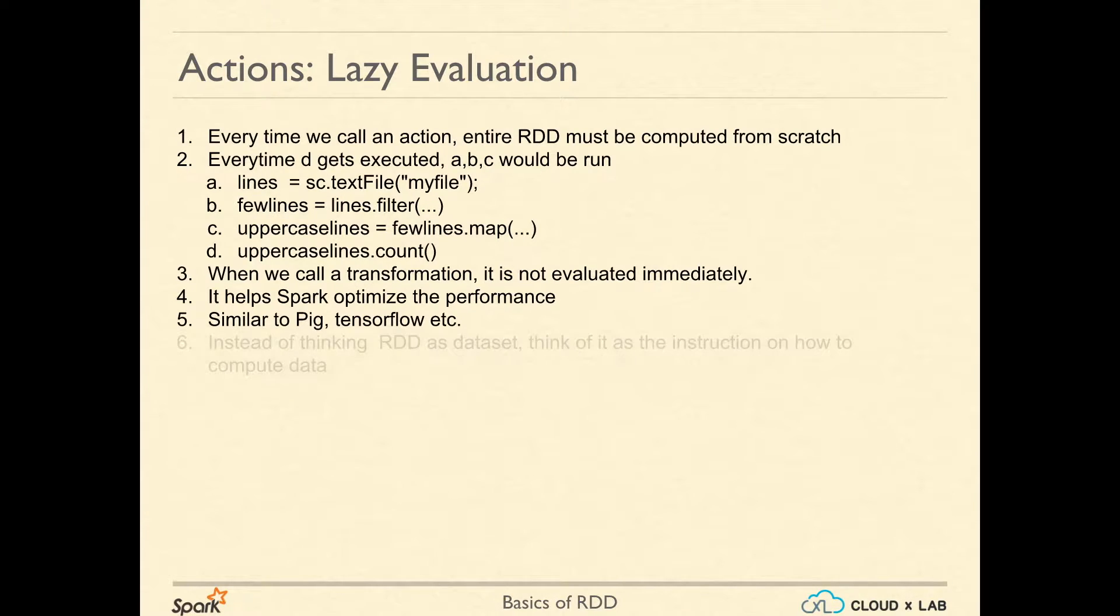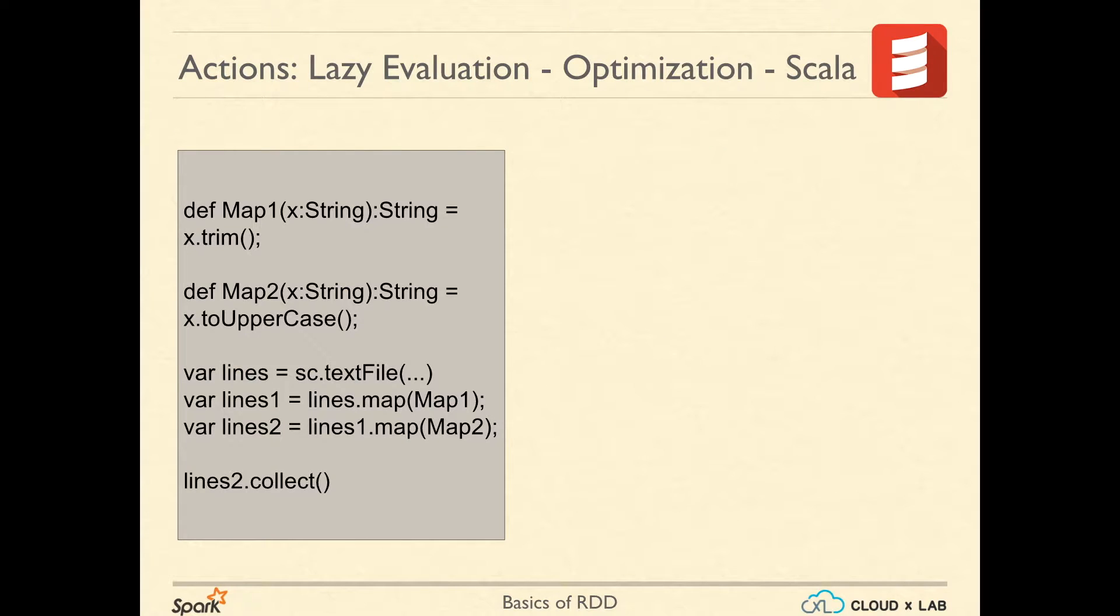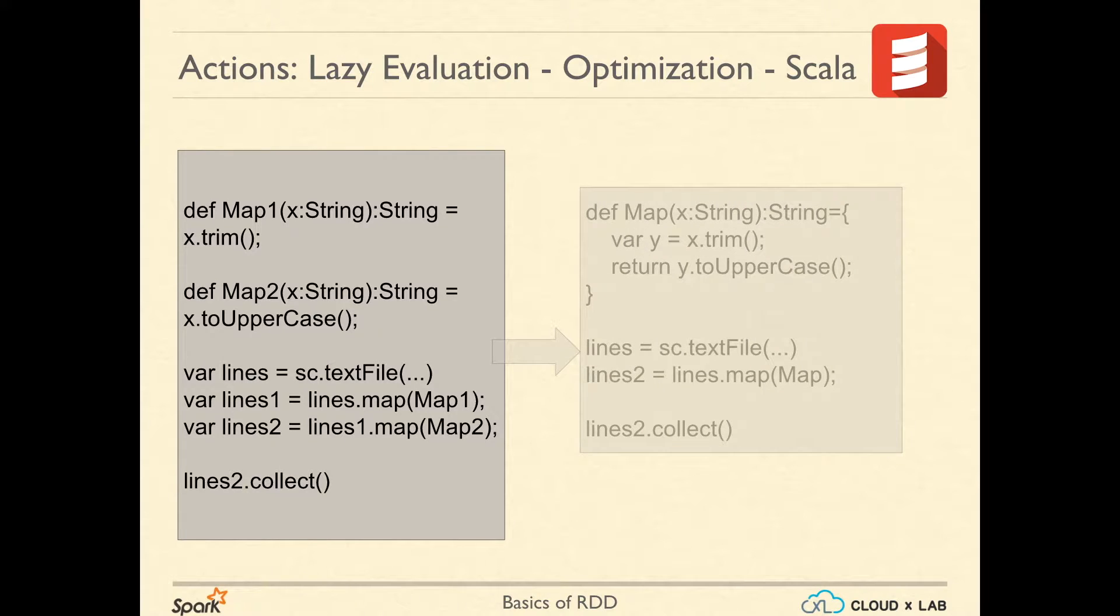Instead of thinking of RDD as a dataset, think of it as the instruction on how to compute data. On the left, you can see the code has two consecutive map transformations, and because of lazy evaluation, Spark gets to club these two map transformations into one. This minimizes data transfer and duplicate computations.